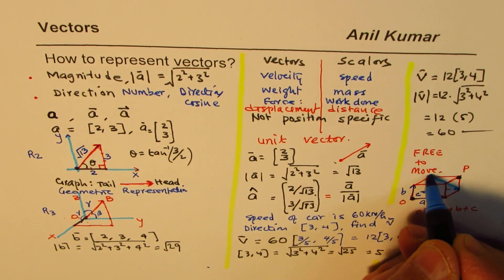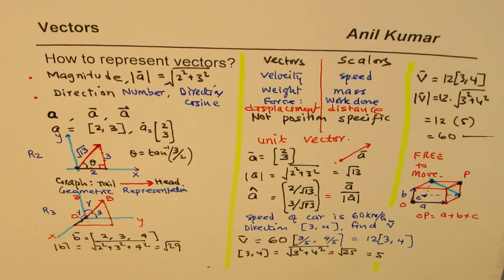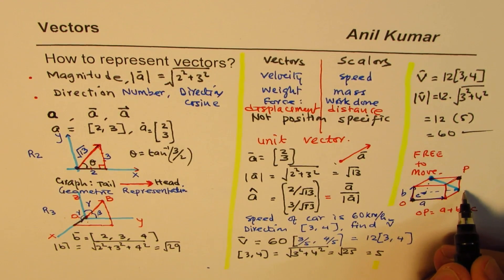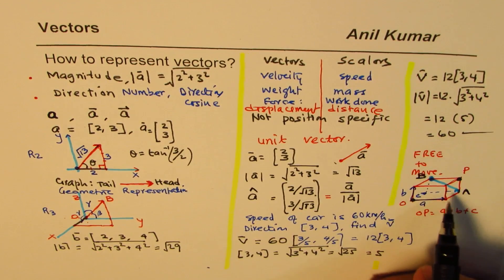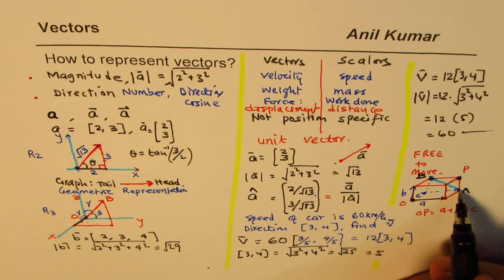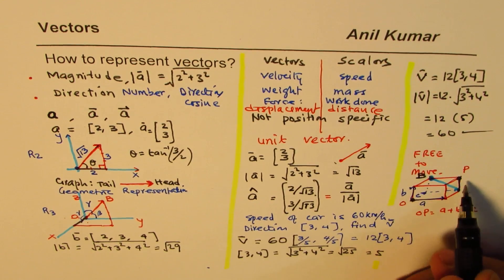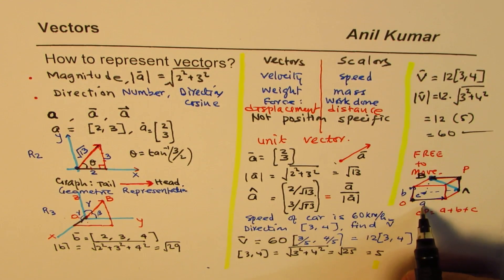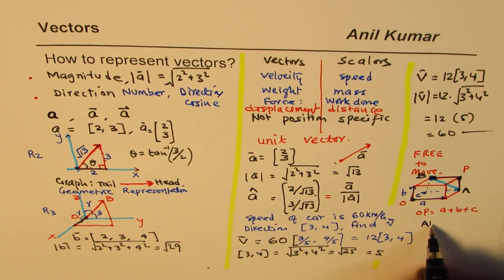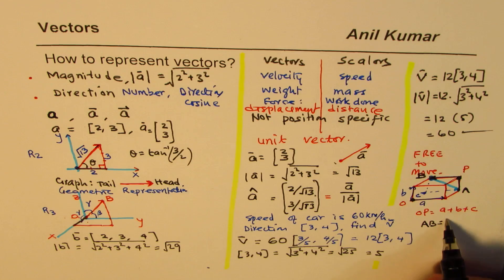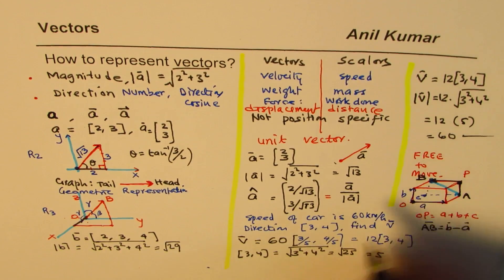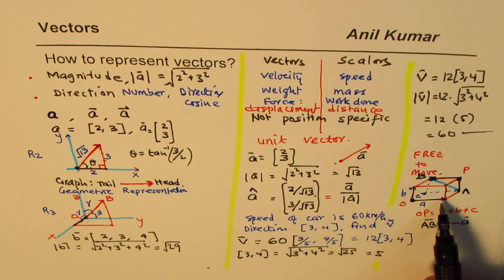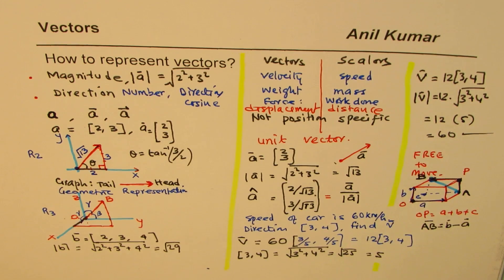If you want a vector between two points A and B, you go up by b and then left by minus a, so vector AB equals b minus a. That is how you represent vectors using geometry.